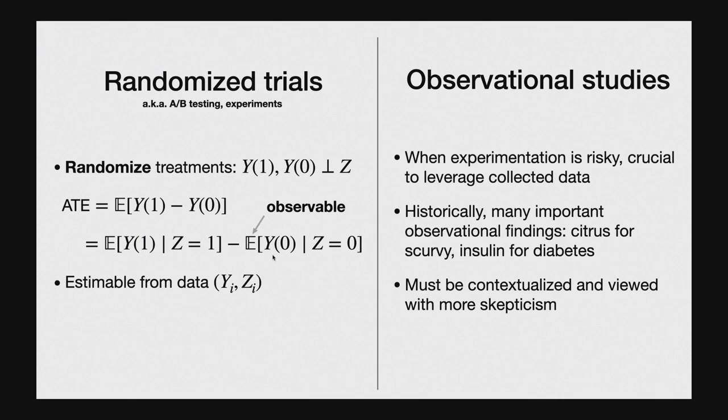This seemingly trivial mathematical step is actually the crux of causal inference — we're using the underlying structure of the problem to turn an unobservable counterfactual quantity into something we can actually observe and estimate using data. But of course, there are many problems where we can't randomize treatment decisions: we can't randomize school assignments for the general public, whether or not we sell a drug to the general population, or most economic policies.